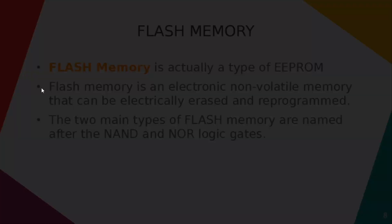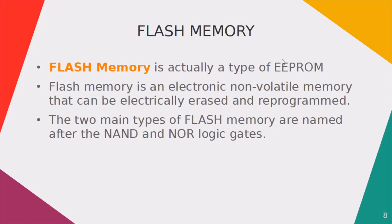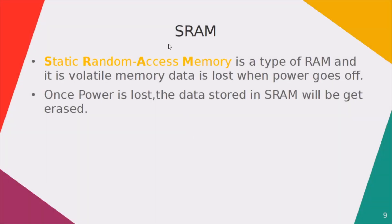Next we are going to see about flash memory. It is actually a type of EEPROM and is classified into two types: one is NAND flash and the other is NOR flash. We will see a lot more about flash memory in future videos. Next is static RAM. Static RAM is actually a type of volatile memory where data retention is not possible.